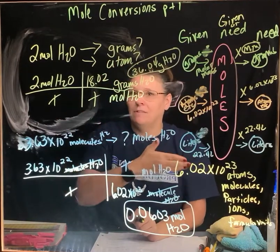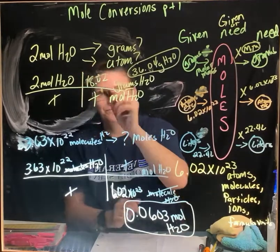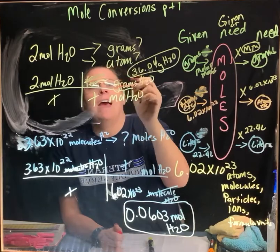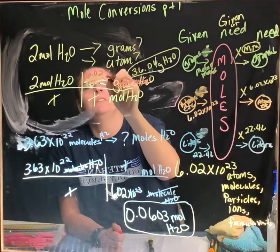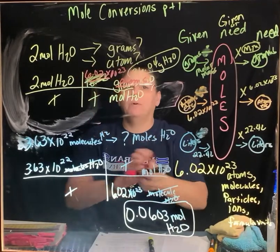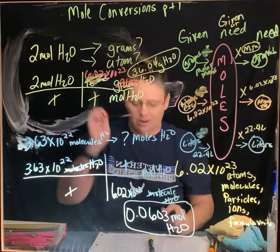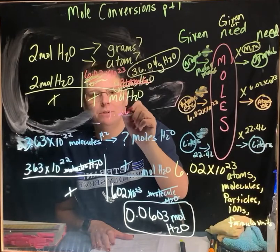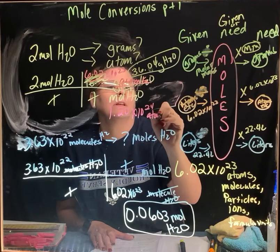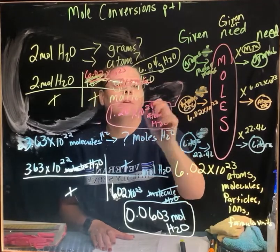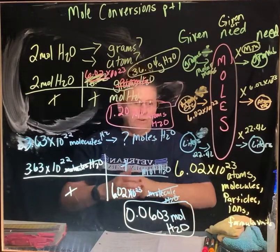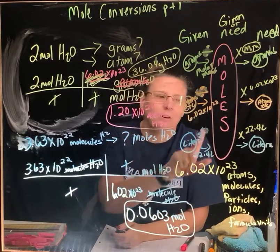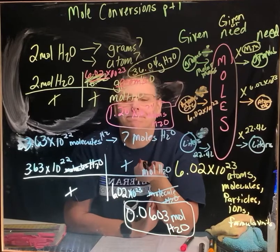What if I wanted to find the atoms instead? All I do is swap in 6.02 times 10 to the 23rd atoms in place of the molar mass. So with 2 moles of H2O, I multiply 2 times 6.02 times 10 to the 23rd, and I end up with 1.20 times 10 to the 24th atoms of H2O. Please come to class with your notes — you'll have a quiz based on this. There will also be a part 2 covering the two-step conversion. Have a good night.